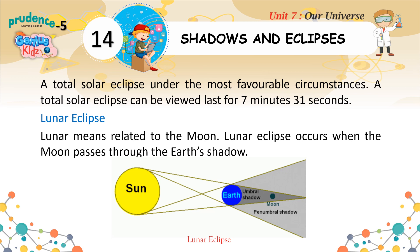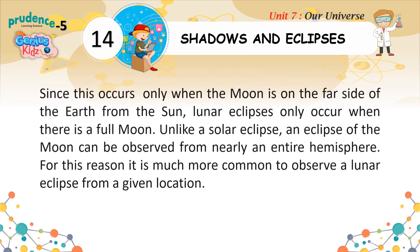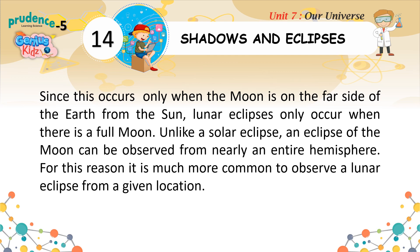Lunar means related to the moon. A lunar eclipse occurs when the moon passes through the earth's shadow. Since this occurs only when the moon is on the far side of the earth from the sun, lunar eclipses only occur when there is a full moon. Unlike a solar eclipse, an eclipse of the moon can be observed from nearly an entire hemisphere, making it much more common to observe a lunar eclipse from a given location.